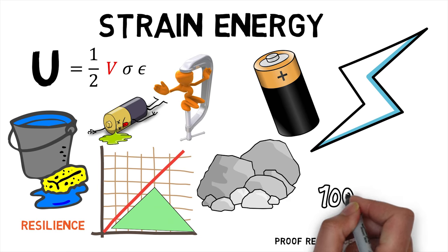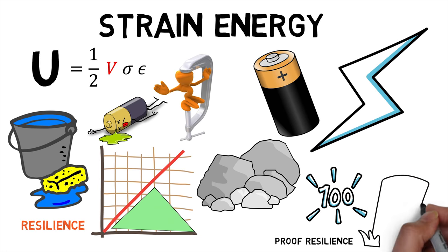Proof Resilience is defined as the maximum energy that can be absorbed up to the elastic limit without creating a permanent distortion.